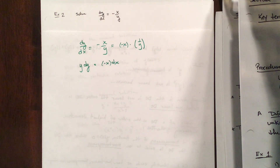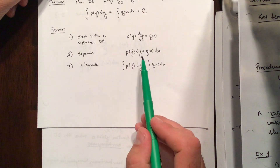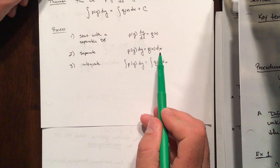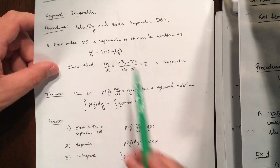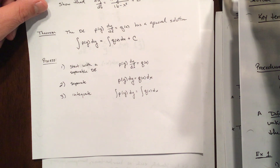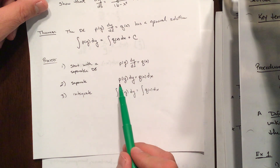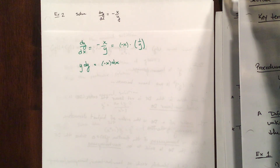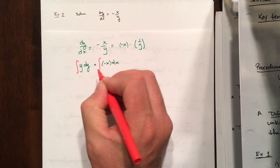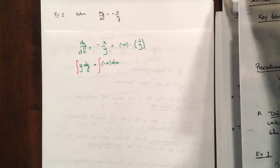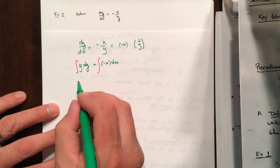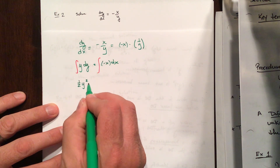Now we have y dy equals negative x dx. Our goal is to write it as a function of y times dy equals a function of x times dx. The next step is to integrate both sides. Integrating the left side with respect to y gives one half y squared plus a constant — I'll call it constant one. On the right side we get negative one half x squared plus constant two.